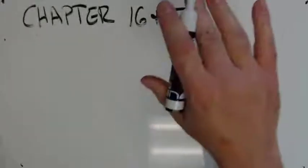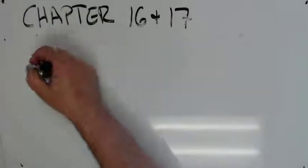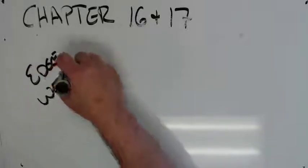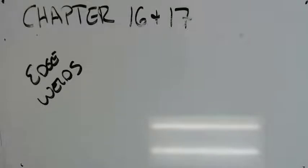Now edge welds are very different. They are used almost exclusively in sheet metal fabrication. They do have arrow side, other side, or both sides significance and are used with flange butt joints, flange corner joints, and edge joints.